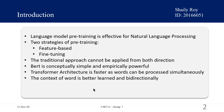BERT means Bidirectional Encoder Representations from Transformers. Transformers are faster as words can be processed simultaneously and context of words can be better learned as they can learn context from both directions simultaneously. BERT alleviates the previously mentioned unidirectionality constraint by using a Masked Language Model (MLM) pre-training objective. The masked language model randomly masks some of the tokens from the input and the objective is to predict the original vocabulary ID of the masked word based only on its context.